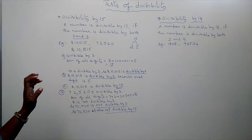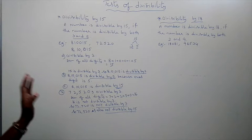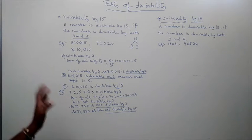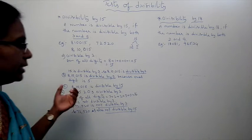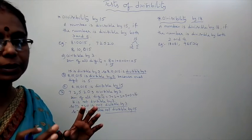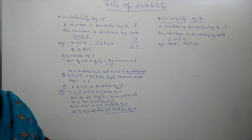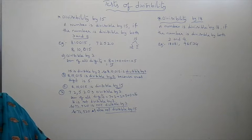If 3 is not divisible, then 15 is also not divisible. Both 3 and 5 should be divisible — only then that number is divisible by 15. What is the rule of 15? If a number is divisible by both 3 and 5, then that number is divisible by 15.